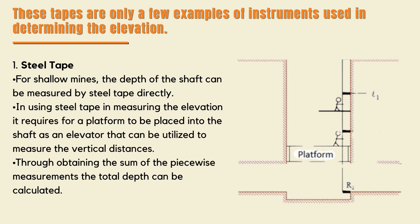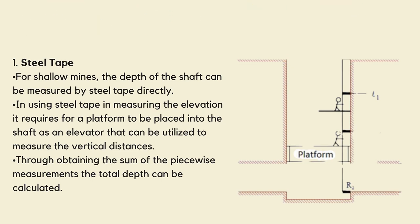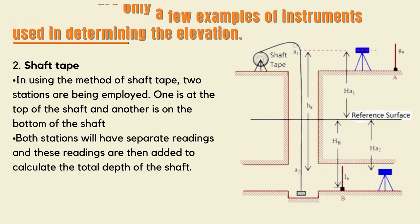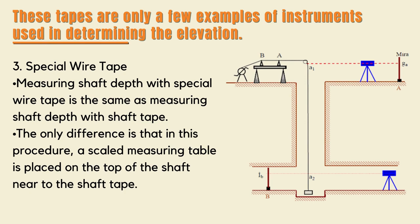In using steel tape to measure elevation, it requires a platform to be placed into the shaft as an elevator that can be utilized to measure the vertical distances. Through obtaining the sum of the piecewise measurements, the total depth can be calculated. In using the shaft tape method, two stations are employed — one at the top of the shaft and another at the bottom. Both stations have separate readings, and these readings are added to calculate the total depth. For special wire tape, the procedure is the same as with shaft tape, except that a scaled measuring table is placed on top of the shaft near the shaft tape.